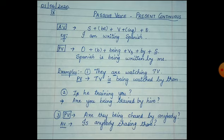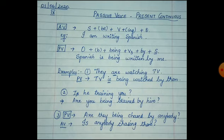'I am writing Spanish' is a complete active voice sentence in present continuous form. Let's convert it into passive voice. In passive voice, the object comes to the beginning of the sentence, followed by a be verb and then 'being,' because we are keeping it in present continuous form. So: 'Spanish is being written by me.' 'Written' is the V3 form of the verb. We need to use 'is being' or 'are being' to maintain the present continuous tense.